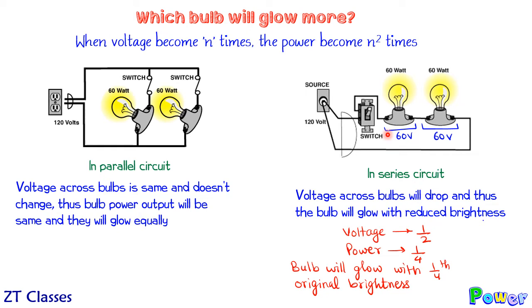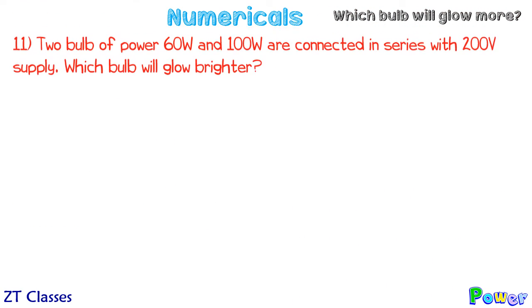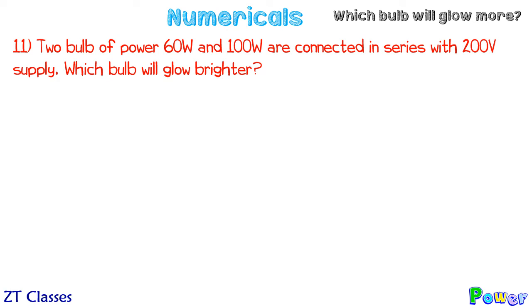In series, whenever you connect two or more bulbs, there is a drop in voltage — potential difference — and the power output reduces. Series means less power output, less glow. Let's take a numerical: connect a 60-watt and a 100-watt bulb in series with a 200-volt supply. Since they are in series, they will not work at their normal output — both will work at a lower output, so both will glow less. It's not simply true that the 100-watt bulb will glow more — let's see.